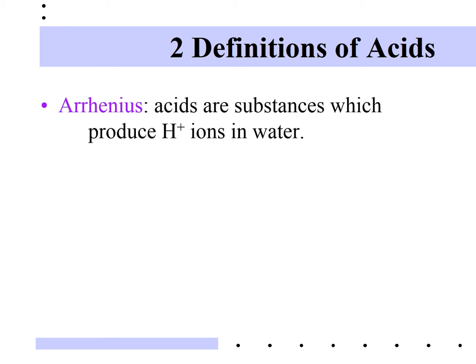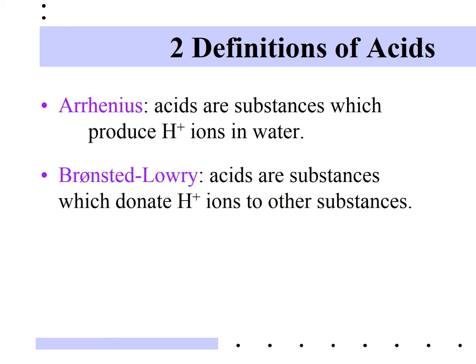One problem with Arrhenius' definition is that it only refers to things dissolved in water. That's where the Bronsted-Lowry definition comes in — two chemists who independently came up with the same idea. They said that acids are substances which donate hydrogen ions to other substances. Notice there's no mention of water, and it tells you what acids actually do in a chemical reaction: they give away hydrogen ions.